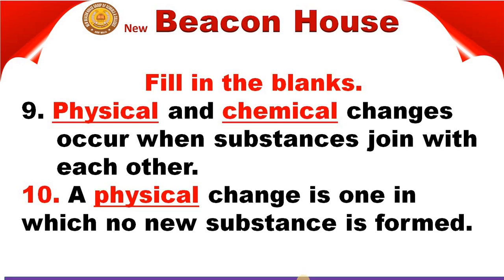First statement: Dash and Dash changes occur when substances join with each other. दो changes होती हैं किसी भी substance के अंदर जब हम कोई substances को join करते हैं। उनके अंदर changes आती हैं। It may be physical or chemical. किसी भी substance के अंदर जब physical change आए या chemical change आए, तो substance की formation होती है। तो answer है: physical and chemical changes occur when substances are joined with each other.